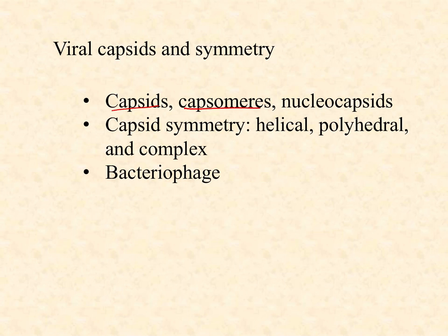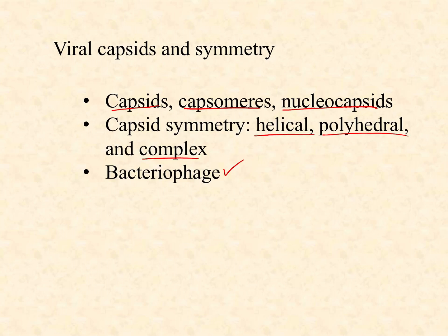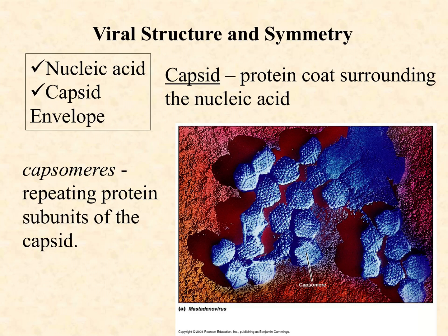Some terms you're going to learn: capsid, capsomere, and the combined term nucleocapsid. Then we're going to look at the three main types of symmetry: helical, polyhedral, and complex. And I want to introduce you to the bacteriophage, because we're going to talk quite a bit about bacteriophage going forward. A lot of what we know about viruses comes from those phages.